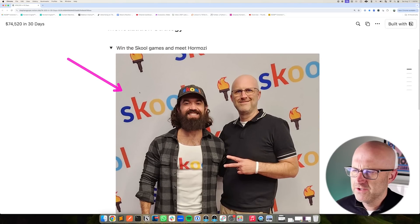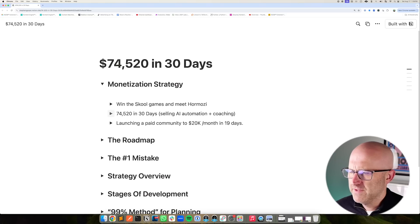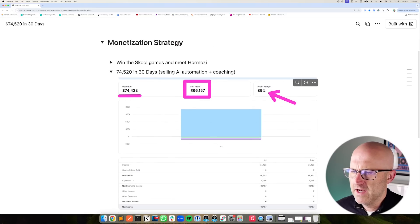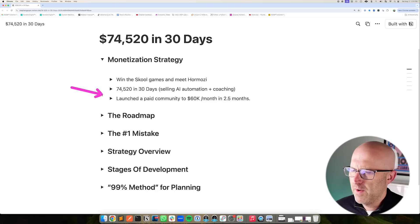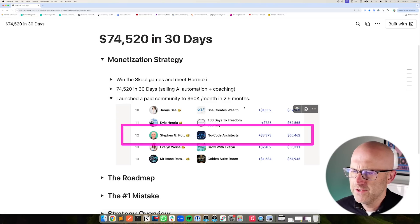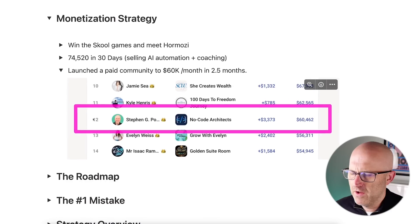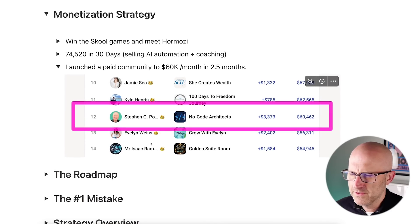In this video, I'm going to show you the complete monetization strategy I used to win the school games and meet Alex Hermozzi and generate $47,000 in 30 days selling an automation and AI product. What's worth pointing out is how profitable these types of offers and products can be with an 89% profit margin and how I was able to launch a paid community to 60k per month in about two and a half months. I'm currently 12 on the all-time leaderboard for the school games.